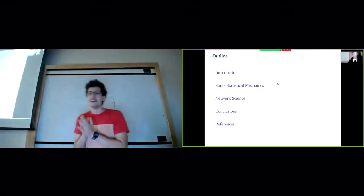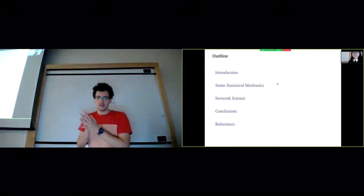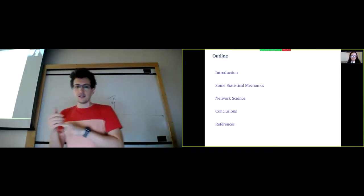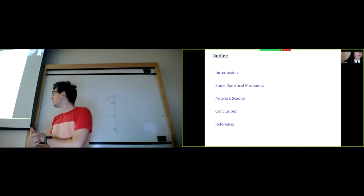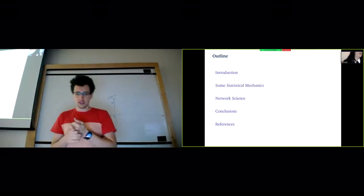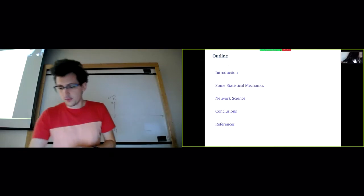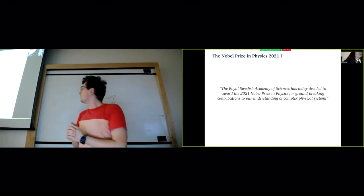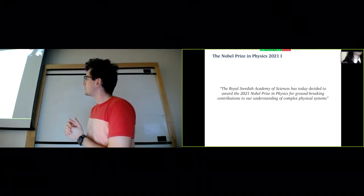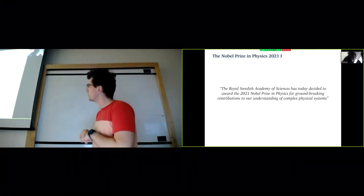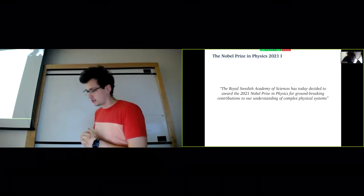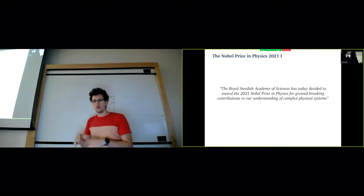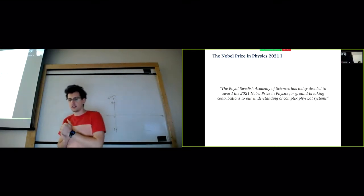I will try to show two of the main results that he came up with, both in statistical physics. One will be more simple but also more accessible. Without further ado, this is a brief outline: some introduction about the prize, some statistical mechanics, its ties to network science, conclusion and references. I will start very briefly by citing what the Swedish Academy of Science told last Tuesday.